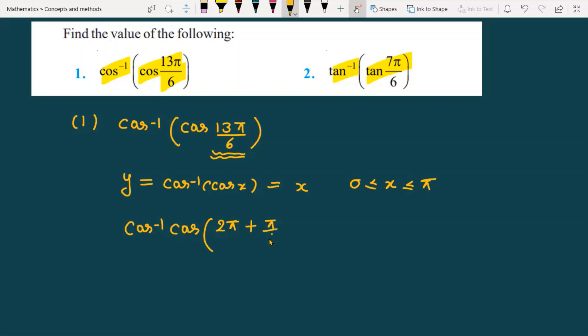There is another property of trigonometry: cos(360° + θ) equals cos θ. So in the next step you can write it as cos inverse cos, and that is equal to π by 6.